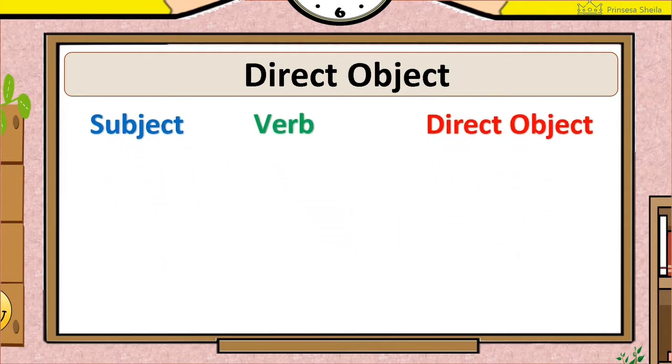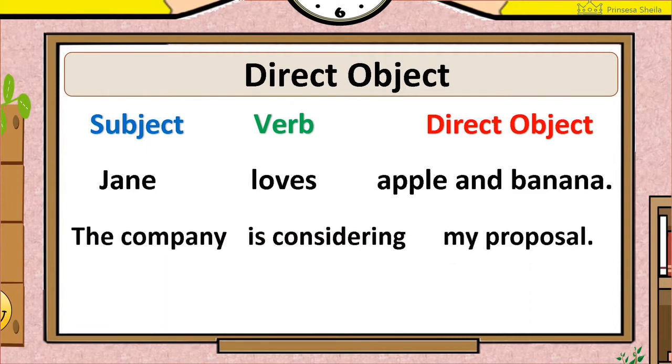More examples. Jane loves apple and banana. The company is considering my proposal. They are playing table tennis.